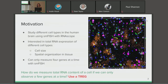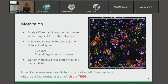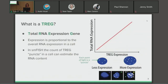The motivation for this work is that our group is working to study different cell types in the human brain using smFISH with RNAscope technology. We're interested in the cell size and spatial organization of different cells across the brain tissue, as well as the total RNA expression of different cell sizes. However, we're limited to measuring total RNA expression because we can only measure four genes at a time with this method. Our solution was to develop a TREG, or a total RNA expression gene.